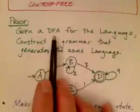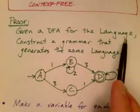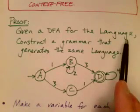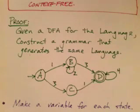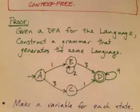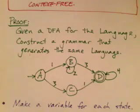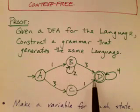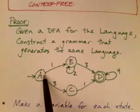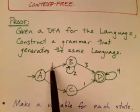Given a deterministic finite state automaton for the language, which we know must exist if it's regular, I'm going to show how to construct an equivalent context-free grammar for that language. That proves that the regular language is context-free, because if a context-free grammar for the language exists, then the language is context-free. Here's an example — a deterministic finite state machine. The terminal symbols are 1, 2, 3, and 4, and you've got some states A, B, C, and D.